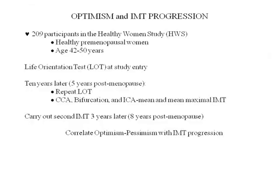Optimism: will optimism protect against cardiovascular disease? We look at 209 participants in the Healthy Women's Study — healthy premenopausal women, age 42 through 50. At the beginning of the study, before menopause, they take the life orientation test, a measurement of optimism and pessimism. Ten years later, five years postmenopause, you repeat the test and measure mean and mean maximal IMT in the common carotid, bifurcation, and internal carotid. You carry out a second IMT three years later and correlate optimism and pessimism with IMT progression.